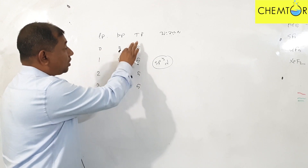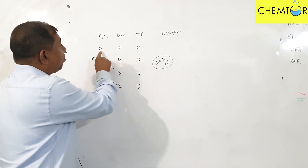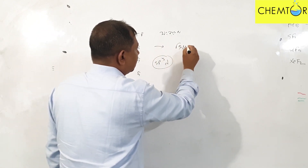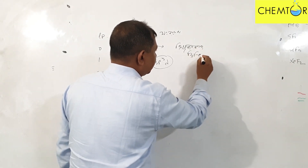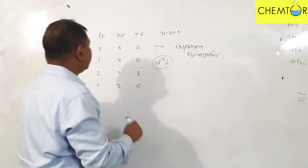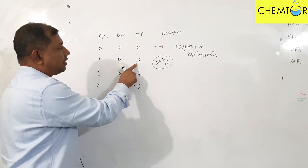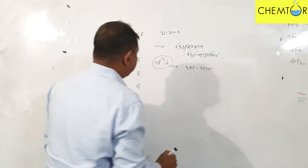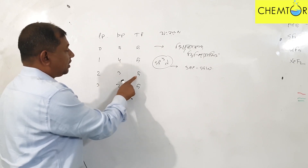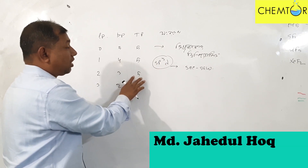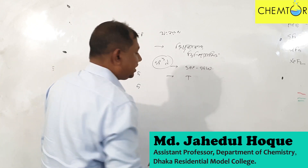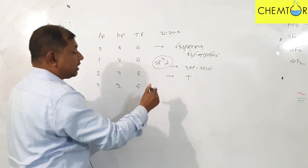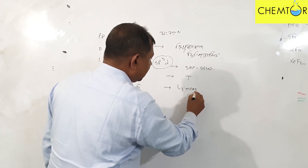When Lone-Pair is 0 and Bond-Pair is 5, the shape is trigonal bipyramidal. When Lone-Pair is 1 and Bond-Pair is 4, the geometrical shape is C-Saw (seesaw). When Lone-Pair is 2 and Bond-Pair is 3, the total shape is T-shape. And when Lone-Pair is 3 and Bond-Pair is 2, the total is 5 and the shape is linear.